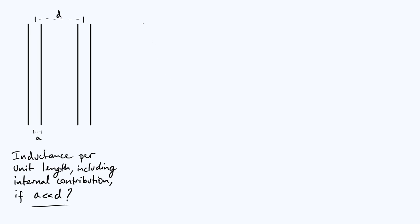Let's start by defining what we mean by inductance. Inductance is the flux linkage φ per unit current. I'm saying flux linkage rather than just flux, and the distinction between those two quantities is going to become very important later on — just bear in mind that φ is really flux linkage.